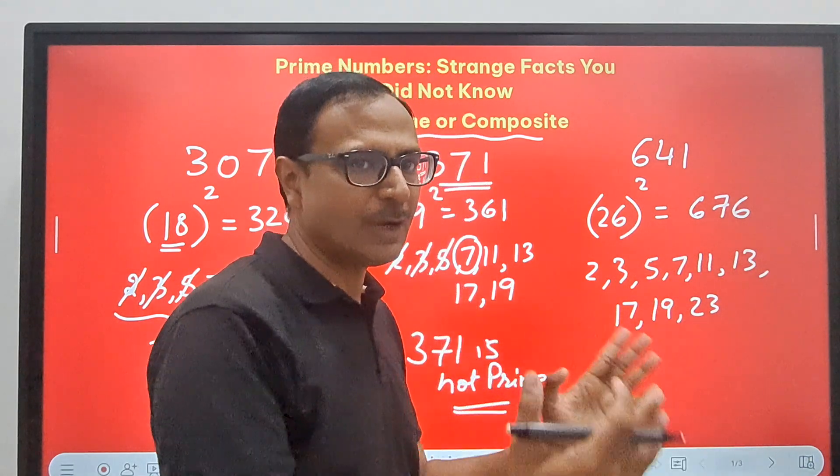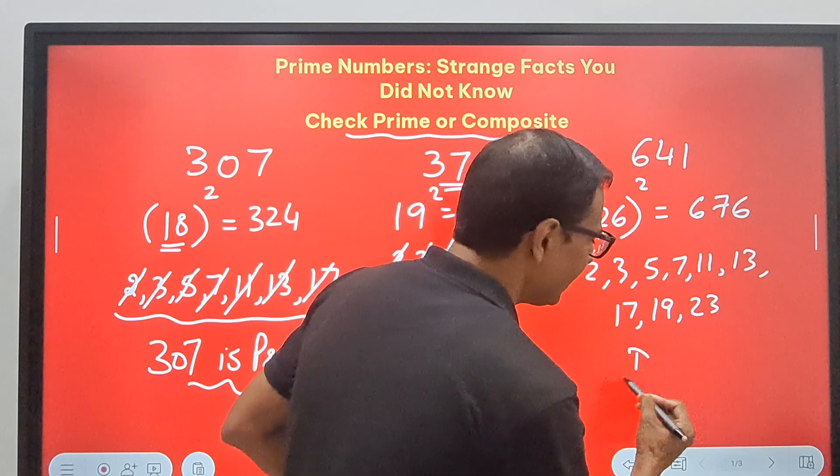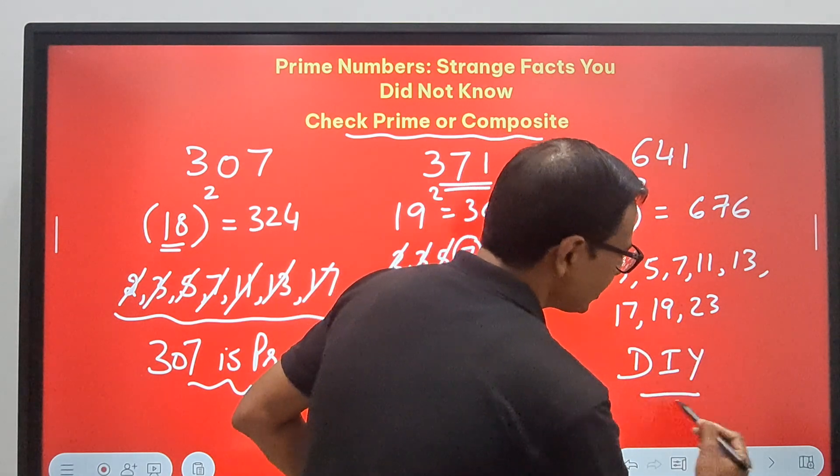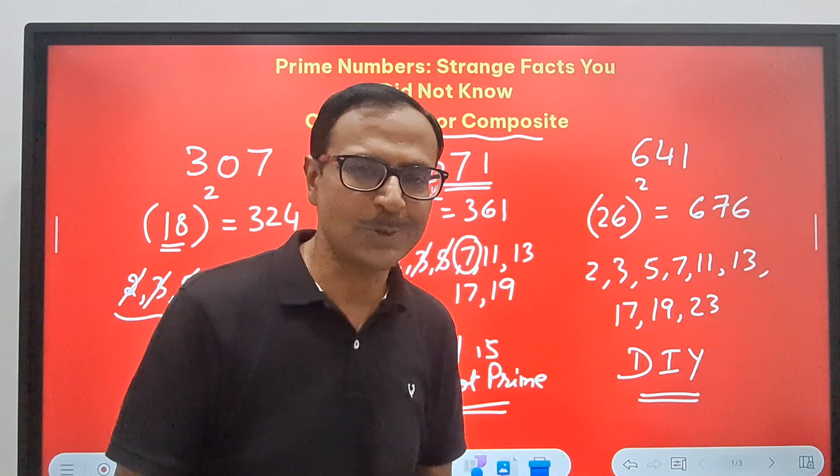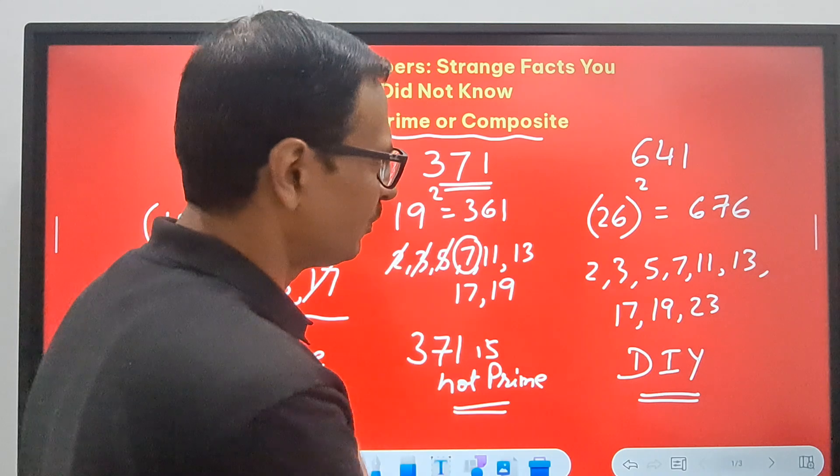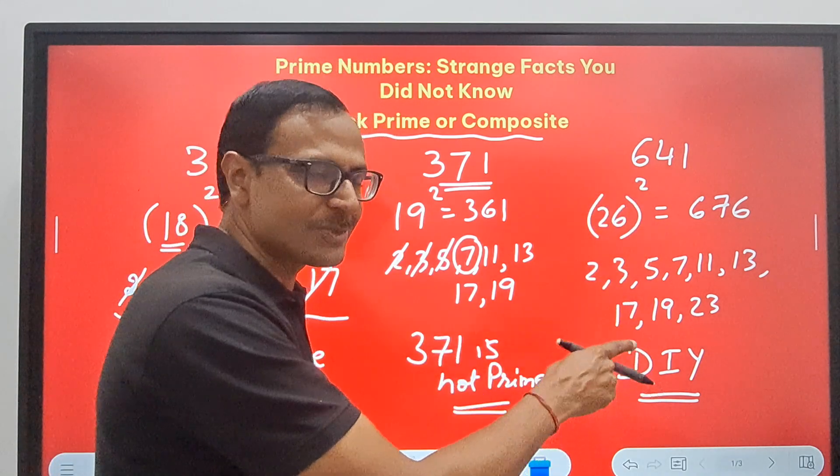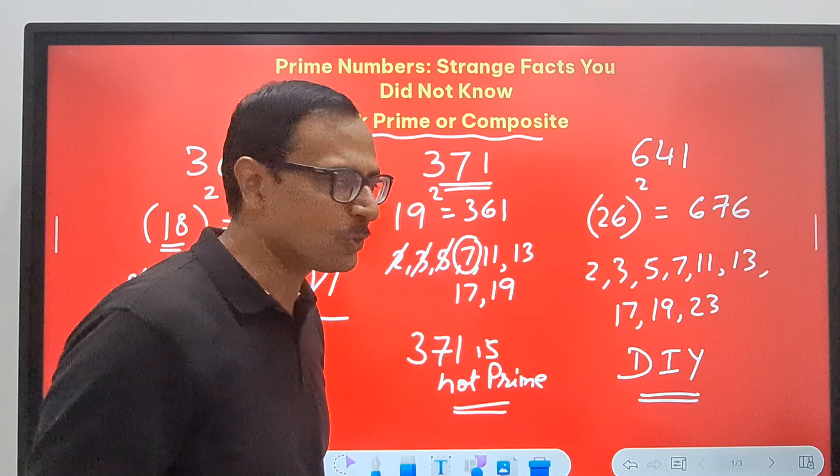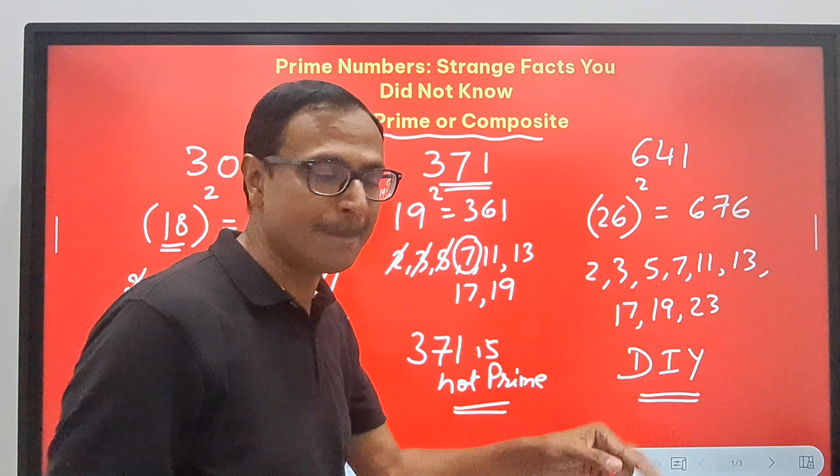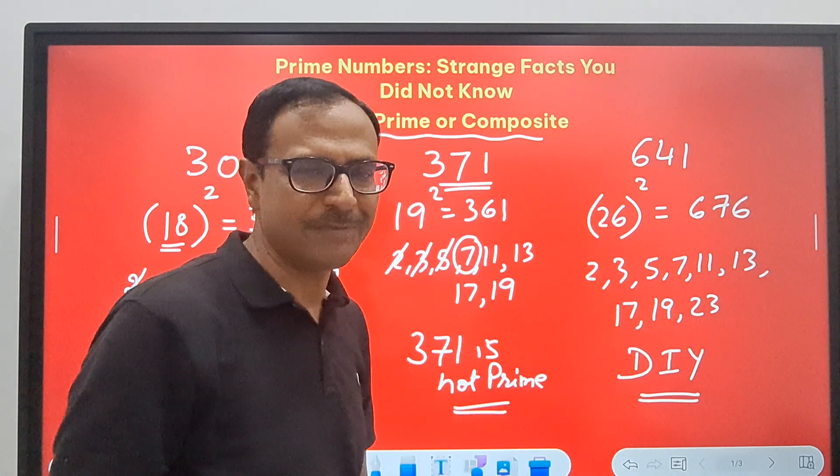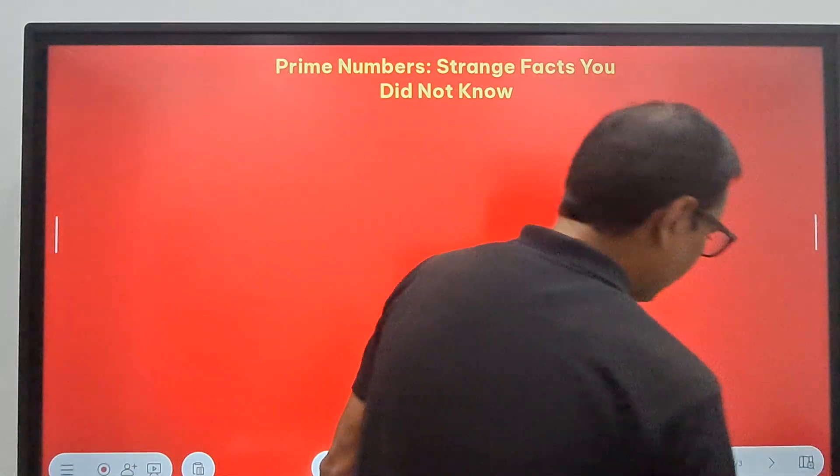These are the numbers you have to check the divisibility of 641 by all these numbers. Even if one of them divides, it will not be prime. So I'll leave this as a DIY, do it yourself question. So 641 is prime or not? You need to tell me the factor if it's not prime. If it's prime, obviously there will be no common factor.